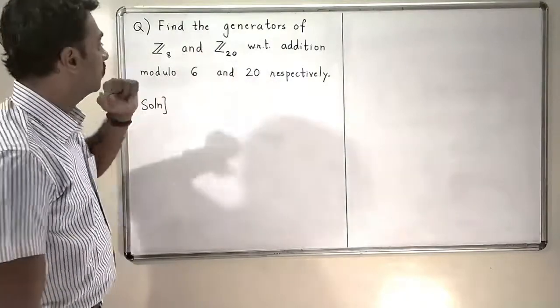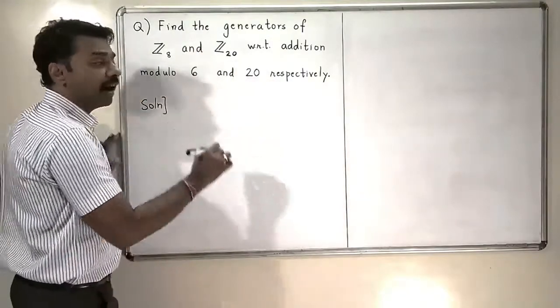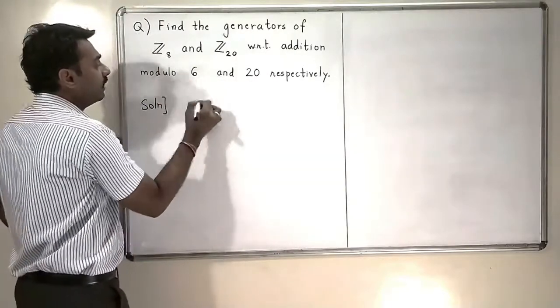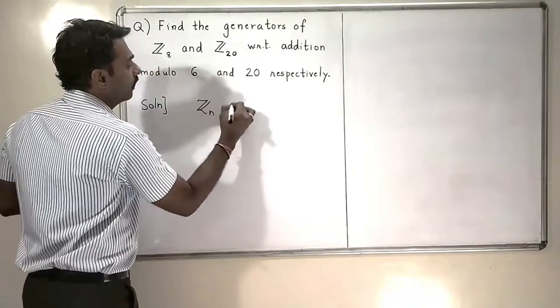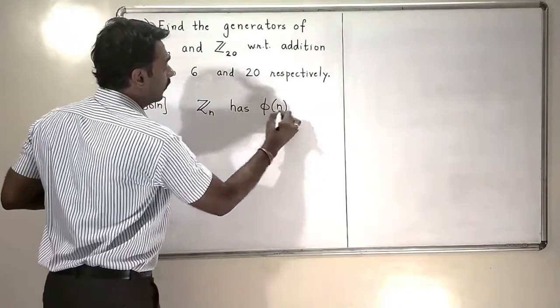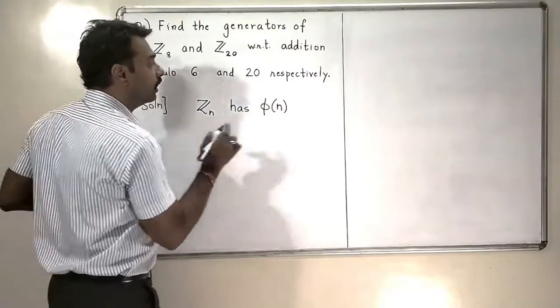We have discussed in the earlier sections how to find the generators of Zn. We know that Zn has phi of n generators with respect to addition modulo n.